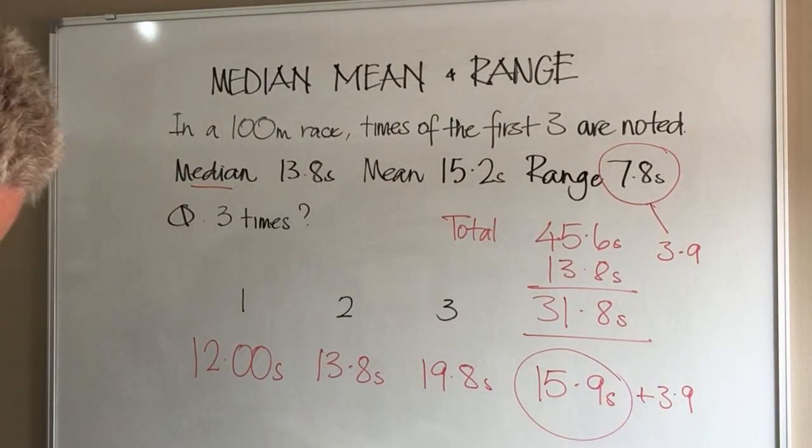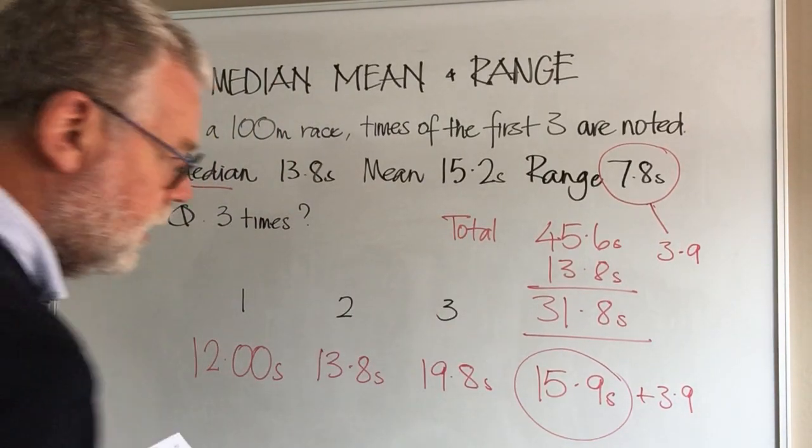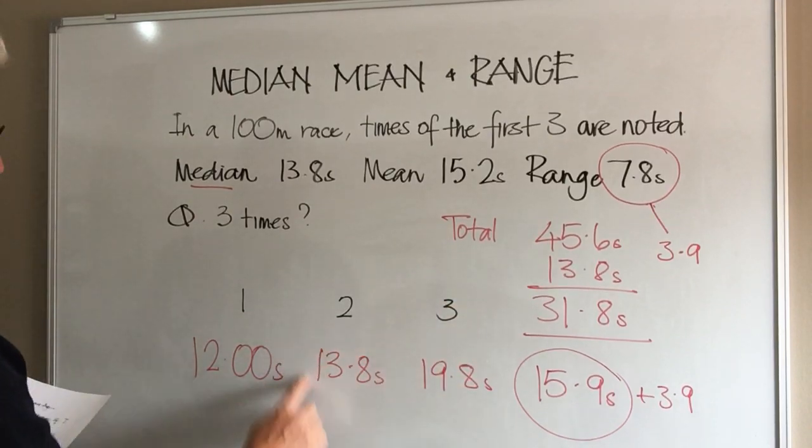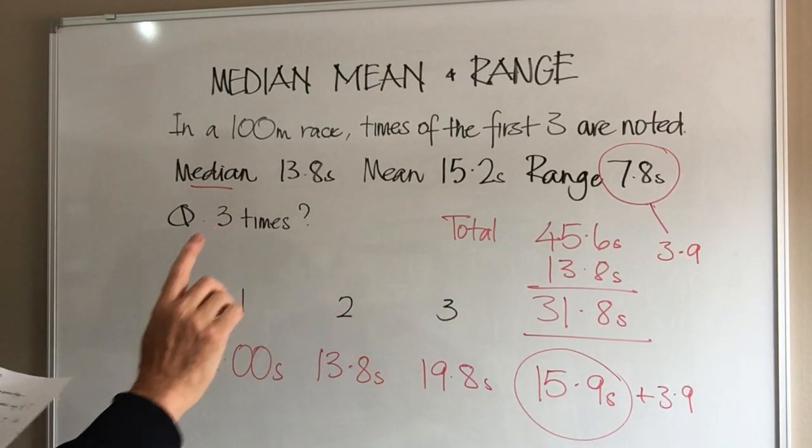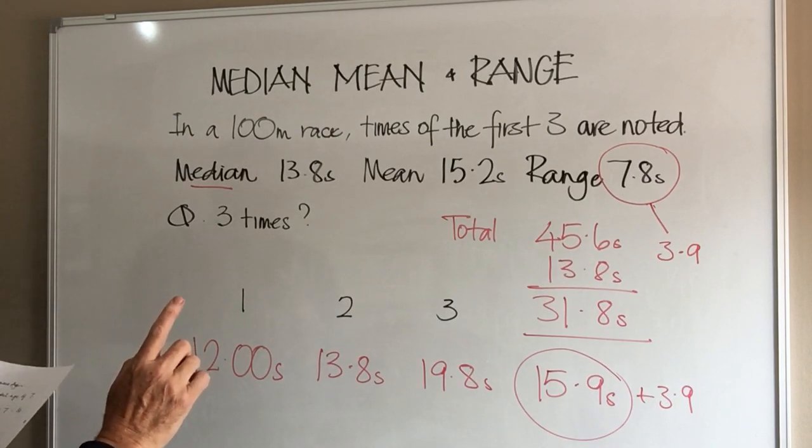Let's see whether that meets all our criteria. We know the mean—we've worked that out. We know the median, so the second runner is 13.8 seconds.